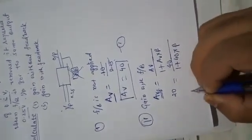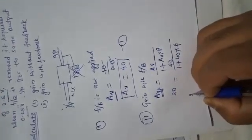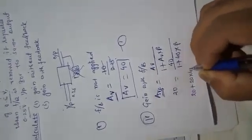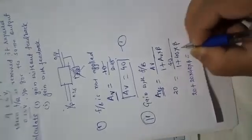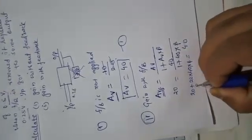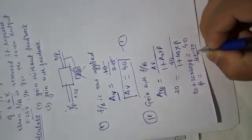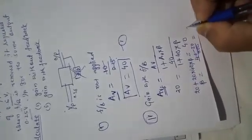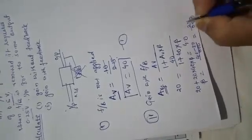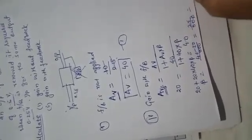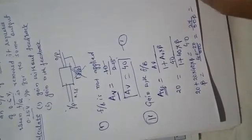Then 20 plus 20 times 40 times beta equals 40. So beta equals 40 minus 20 divided by 800, which is 20 divided by 800, that is 1 by 40. The answer is beta equals 1 by 40.